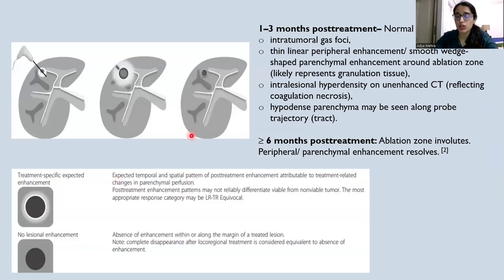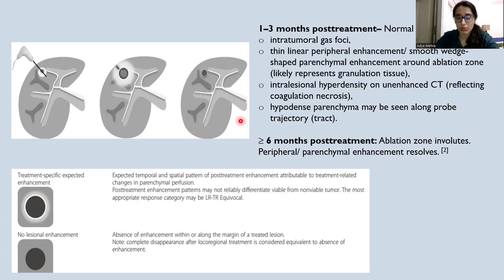Some normal appearances 1 to 3 months post-treatment include intralesional gas foci, linear peripheral enhancement, and smooth wedge-shaped parenchymal enhancement around the ablation zone, which can be due to parenchymal perfusion changes and granulation tissue. Intralesional hyperdensity is seen on plain CT reflecting necrotic tissue, and a hyperdense needle tract may also be seen. More than 6 months post-treatment, the enhancement usually resolves within the ablation zone.